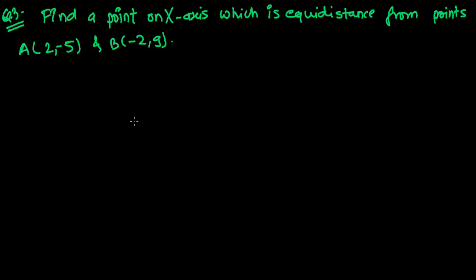Hi friends, here is another problem in coordinate geometry, especially related to the distance formula. The question says: find a point on the x-axis which is equidistant from the points A(2, 5) and B(-2, 9).